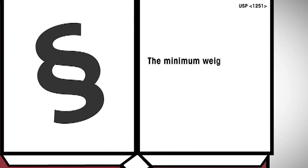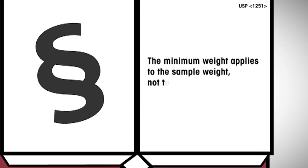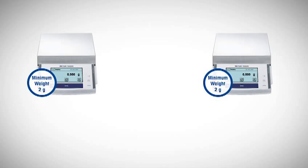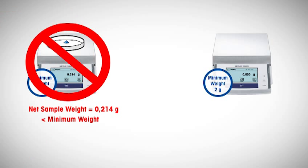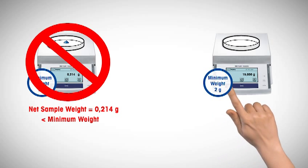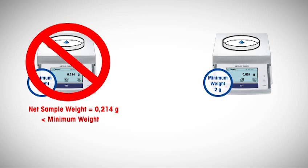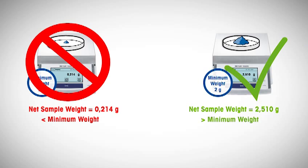The minimum weight applies to the sample weight, not to the tare or gross weight. A common misconception is that if the tare vessel is larger than the minimum weight, the weighing process is in compliance. It is now clearly stated that the net sample weight must be considered, not the gross weight.